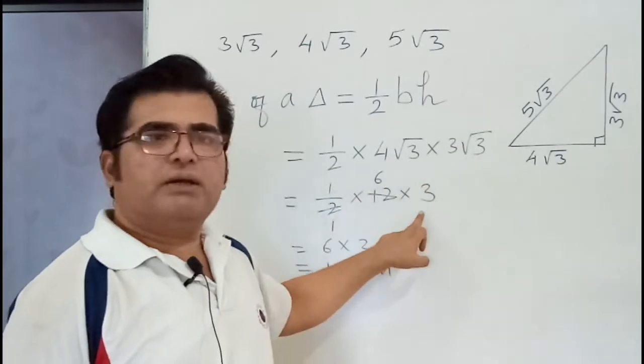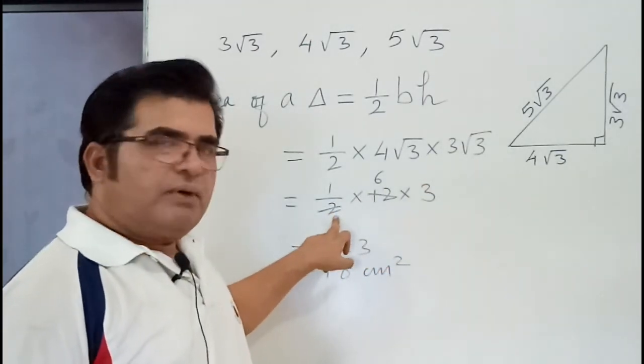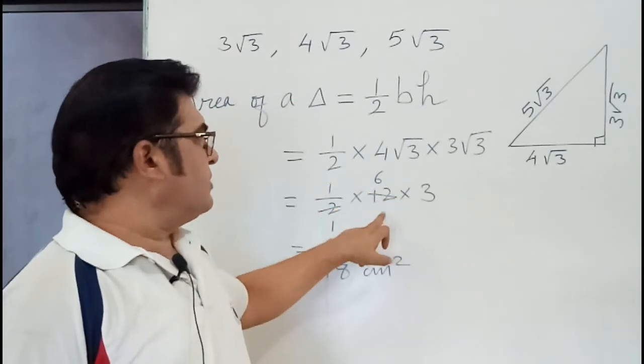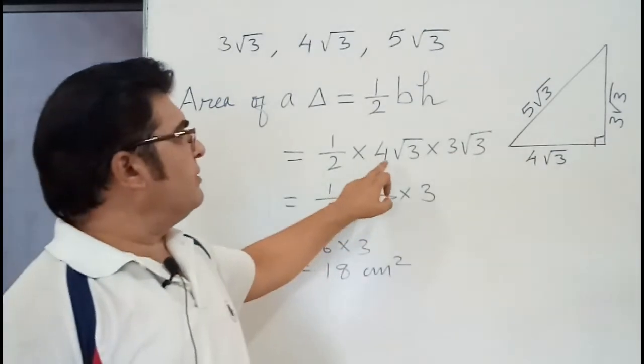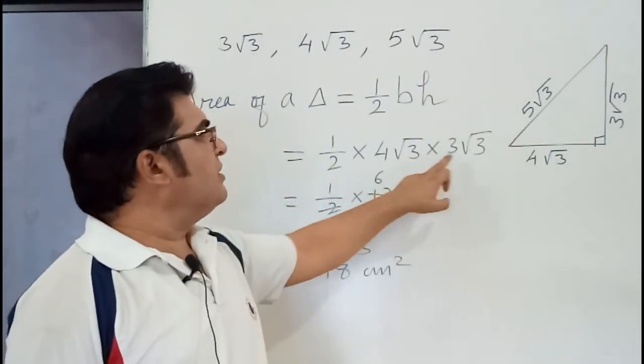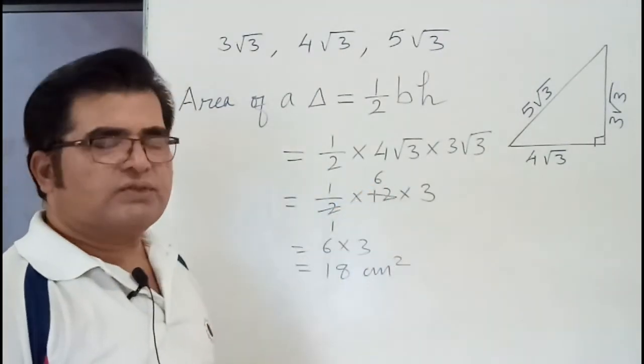√3 times √3 becomes 3. So simplify: 4 times 3 is 12, then half of 12 is 6. Remember, √3 times √3 becomes 3. After that you simplify: 6 times 3.